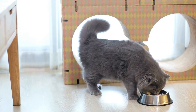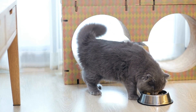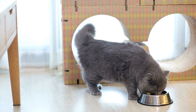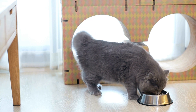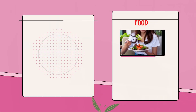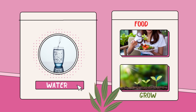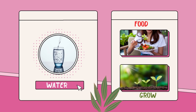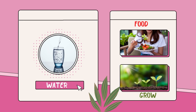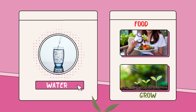A cute kitty enjoys eating his food. So the clues to figure out if something is living or non-living are: first, living things need water; second, living things grow; and last, living things need food.